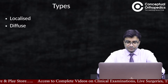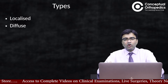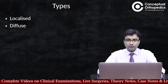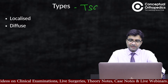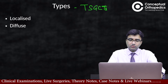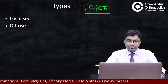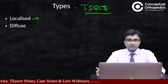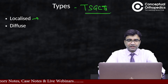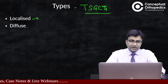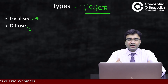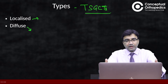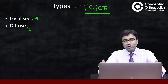Broadly, there are two forms of TSGCTs: the localized form and the diffuse form. As the name suggests, the localized form presents as a single swelling at one extra-articular site, whereas the diffuse form affects larger areas involving joints — commonly seen in the knee joint, hip joint, shoulder, or elbow.